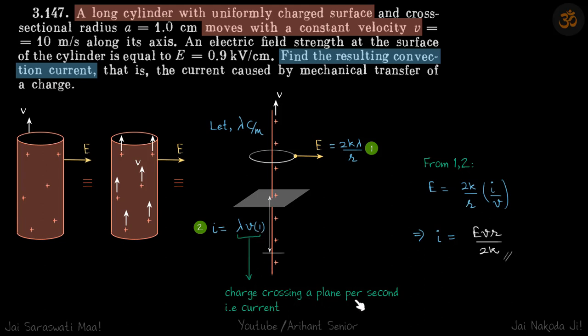And this is the charge crossing the plane per second which is the definition of our current. We can write I as lambda into V.